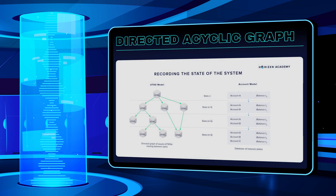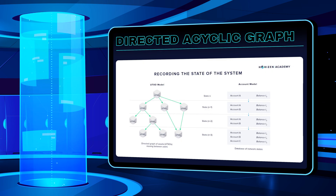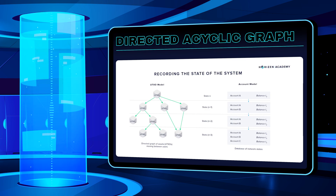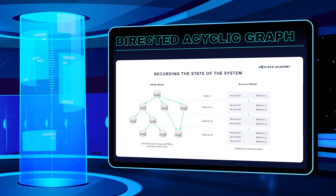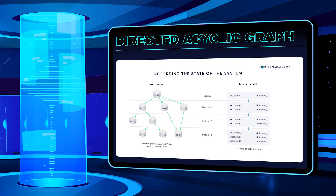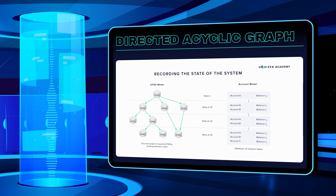This picture shows a directed acyclic graph that represents the UTXO model used in blockchains. Each block in the blockchain is represented by a state. Each transaction is shown by a line that starts at a point that represents the transaction output. Unspent transaction outputs don't have lines starting from them, and in the picture, the unspent outputs are 3, 5, 6, and 7.